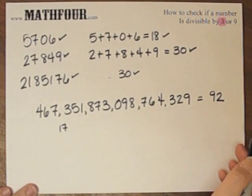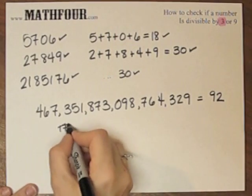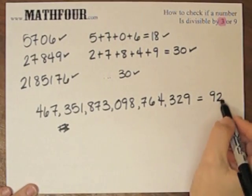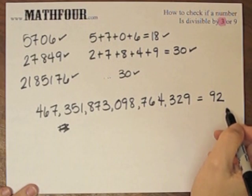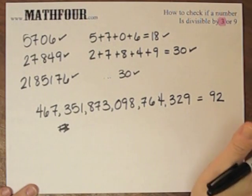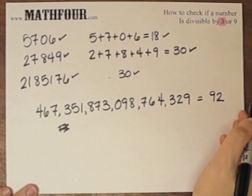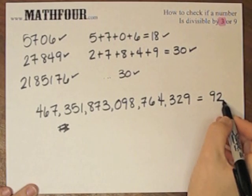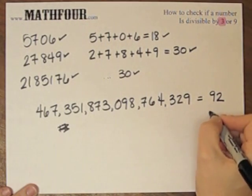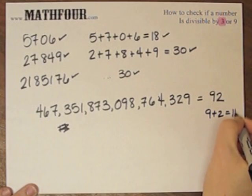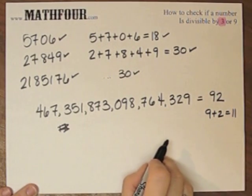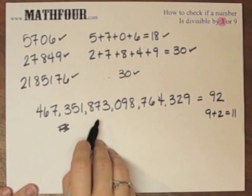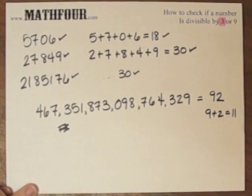You know, 92 is a big enough number for me to go... I'm not sure if 3 goes into that immediately. I mean, obviously you can think about it just a short period of time and you've got it. But you can also do 9 plus 2, 9, 10, 11. So 9 plus 2 is 11. 11 is not divisible by 3. So this is not divisible by 3. So this is not divisible by 3.